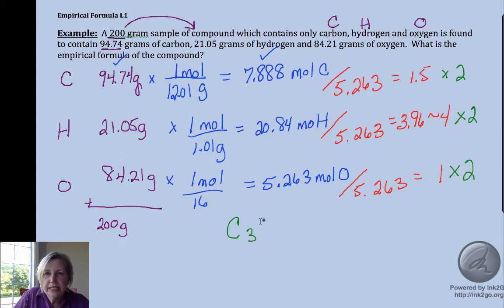So this means we have 3 carbons, we have 8 hydrogens, and 2 oxygens in our empirical formula for this problem.